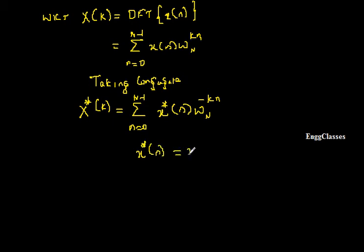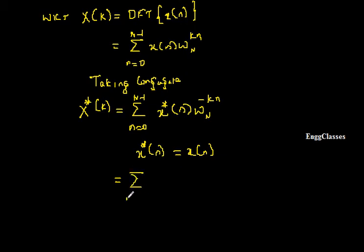Next, since x(n) is real, we can write x*(n) equal to x(n). This is valid only if x(n) is real — the conjugate has its effect only on imaginary numbers; real numbers remain as they are. Therefore we can write the summation from n equal to 0 to N minus 1 of x(n) times W_N to the power minus k·n.